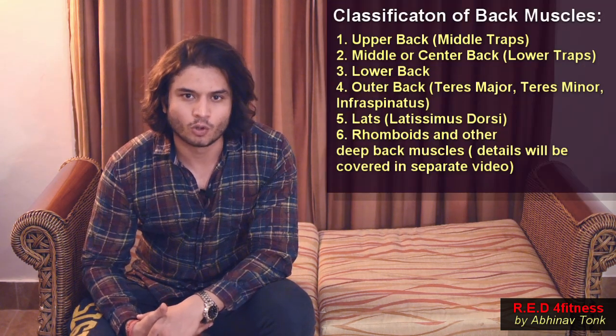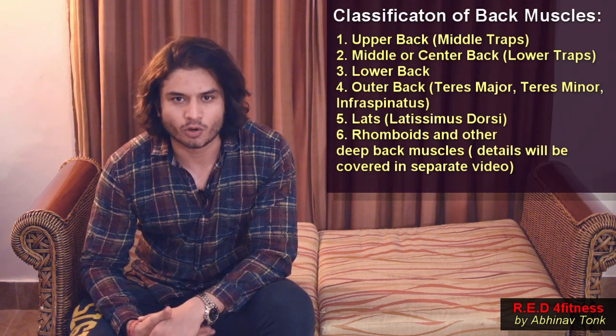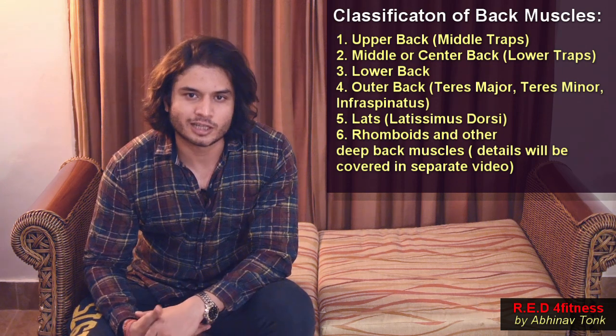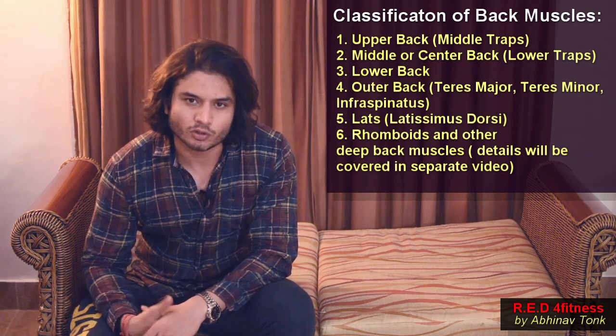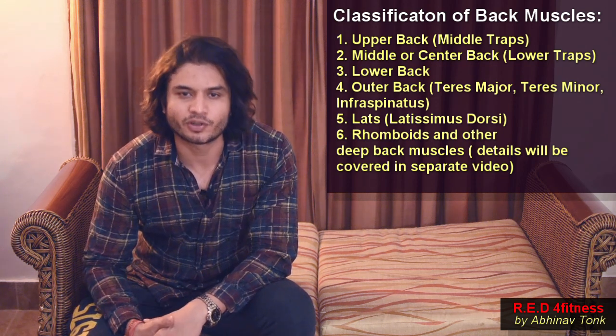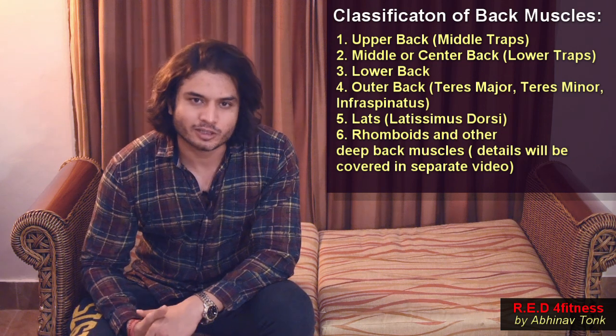The combination of teres major, teres minor, and infraspinatus is collectively known as the outer back, because it lies towards the outer portion of your back. So the classification of back muscles are: upper back, middle back, lower back, lats muscles, outer back, and of course the rhomboid muscle, which lies beneath the trapezius muscle.